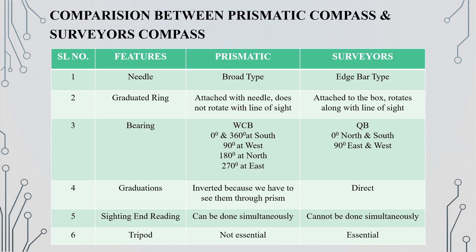Next, we will compare the prismatic compass and the surveyor's compass. The first feature is needle type — the prismatic compass has a broad edge bar type needle attached to the graduated ring. For bearing designation, the prismatic compass uses whole circle bearings: 0° north, 90° east, 180° south, 270° west. The surveyor's compass uses quadrantal bearing: 0° at north and south, 90° at east and west.